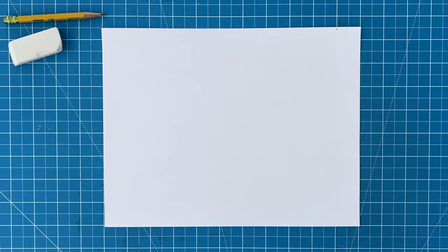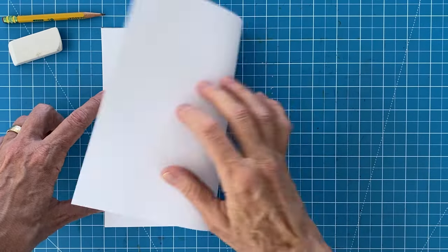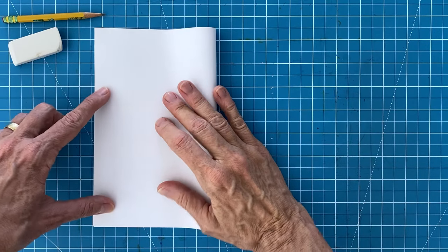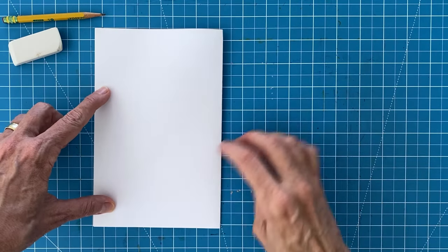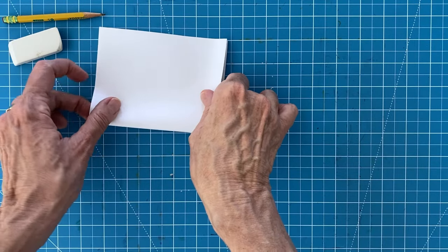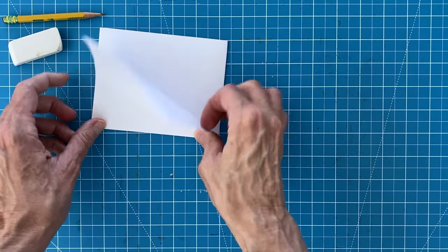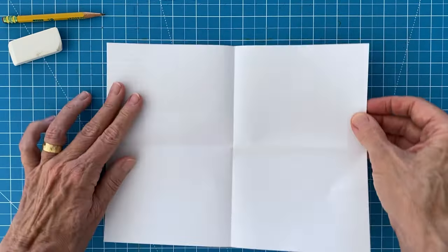Now before you begin your drawing it really helps to first make a guide on your paper. Just fold and crease the paper in half in both directions like I'm doing here and then open it back up. You'll have lines that match my directions which really do help as you draw. Plus they completely disappear by the time you're done coloring.